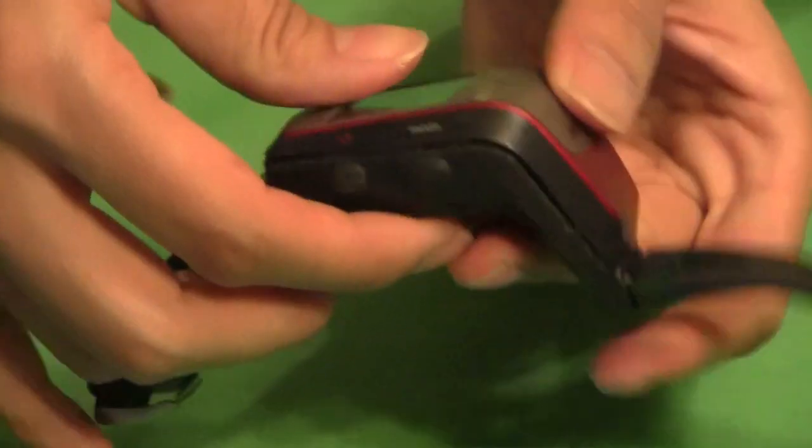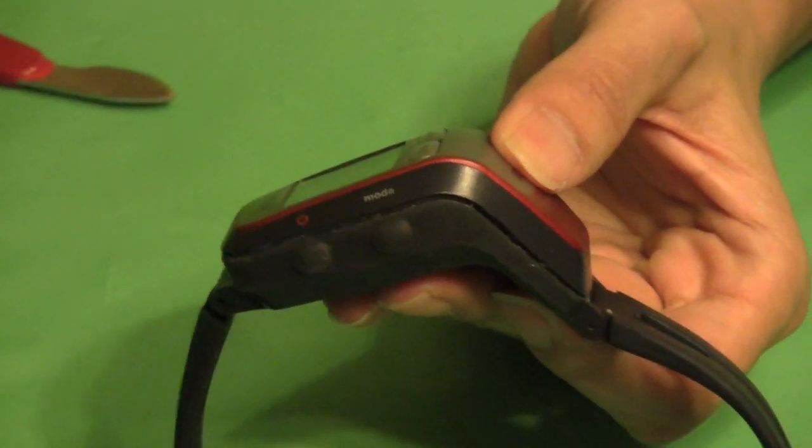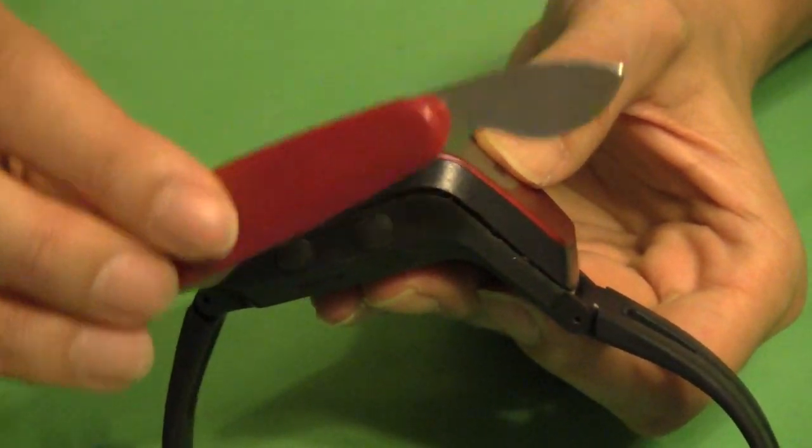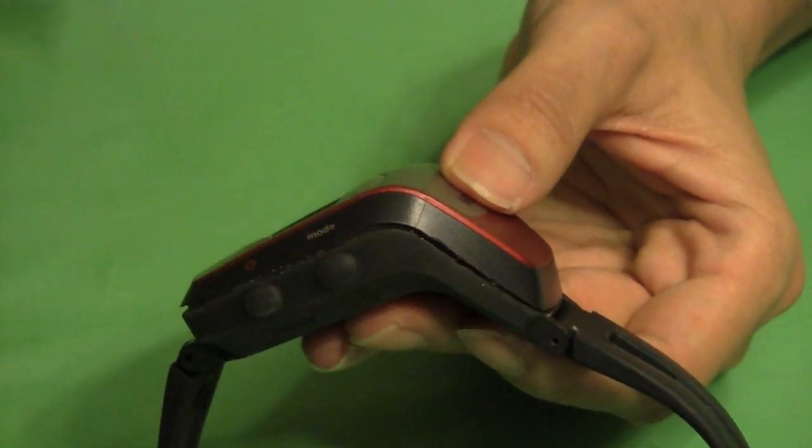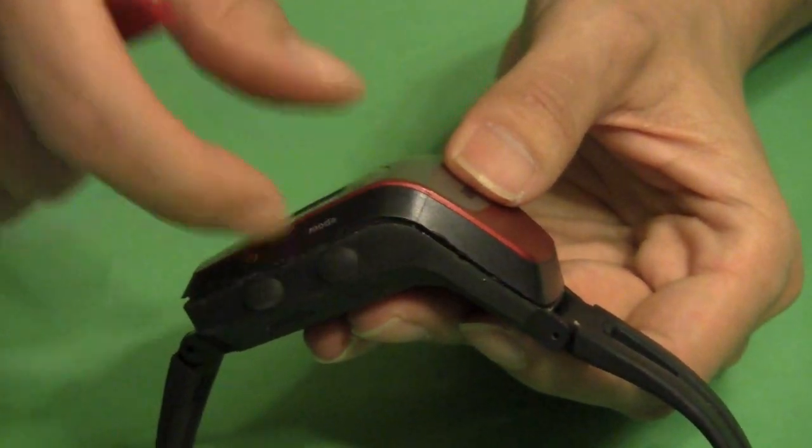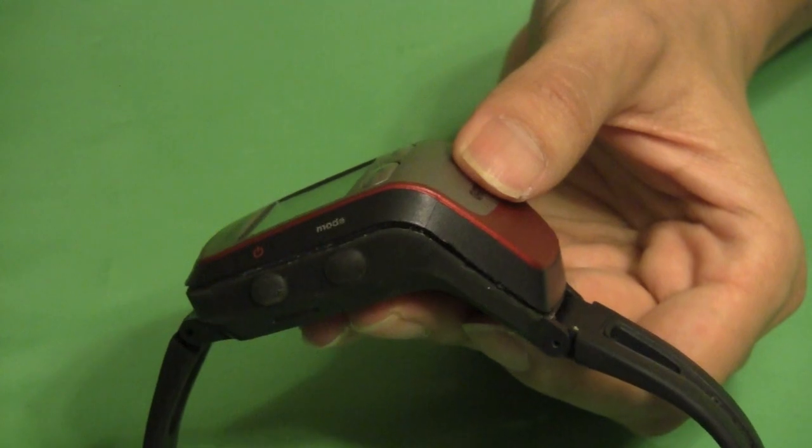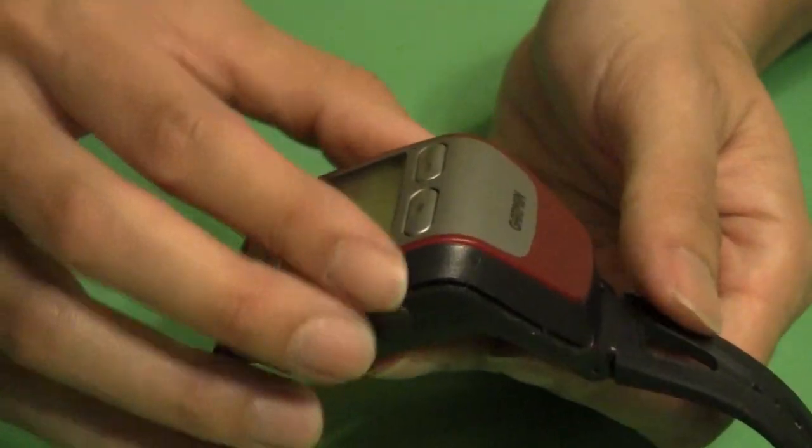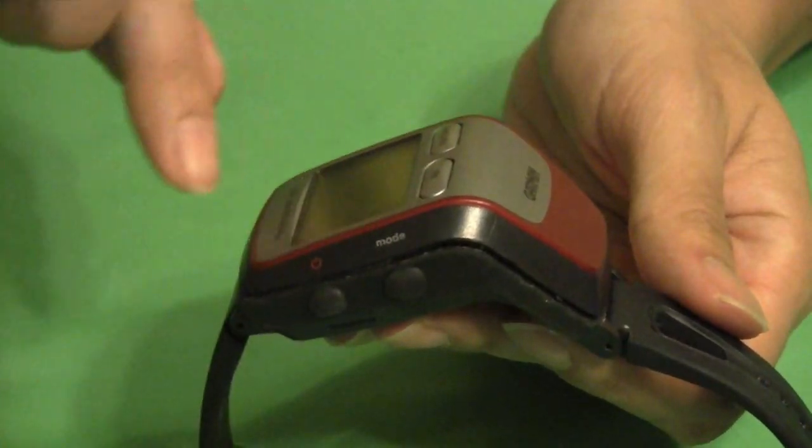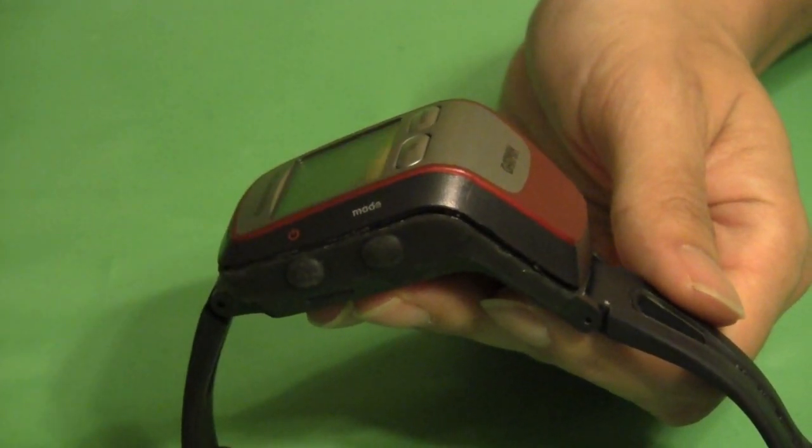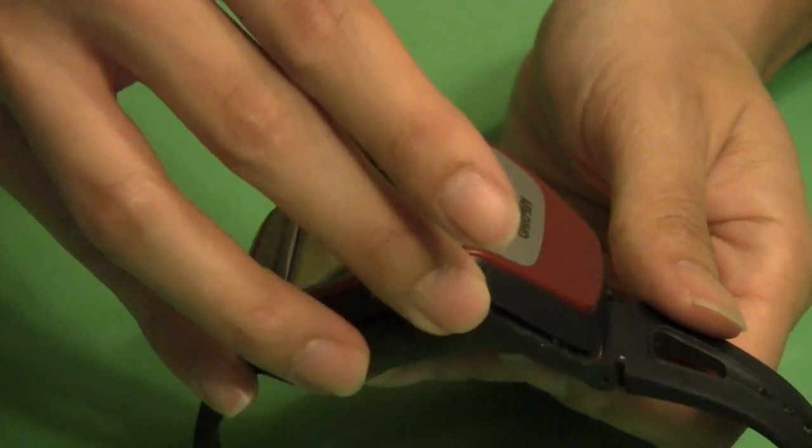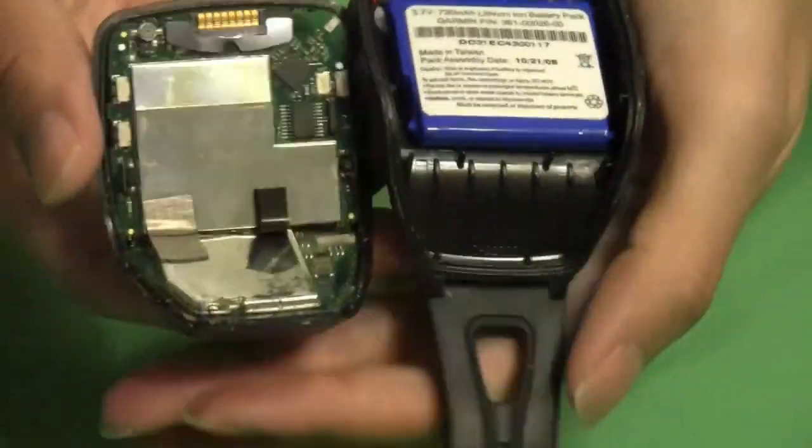Now I've already done this step before I started making this video but what I used is this little pry tool and I wedged it inside this seam right here. The way that your Garmin 305 is put together is actually by glue. So I went all the way around the seam with my little tool here and I was able to pry the two pieces apart. This is the inside of your Garmin 305.